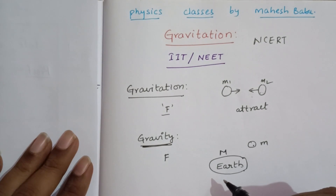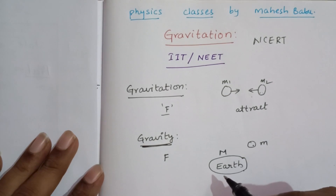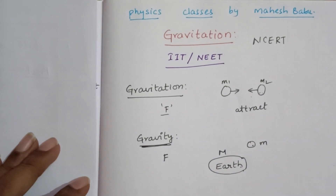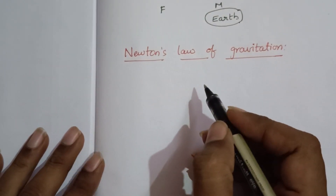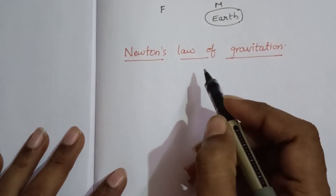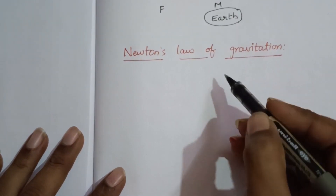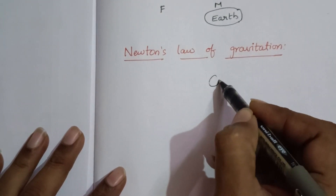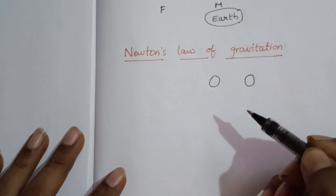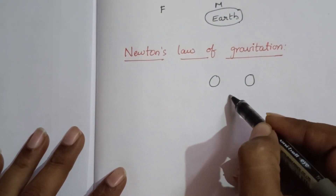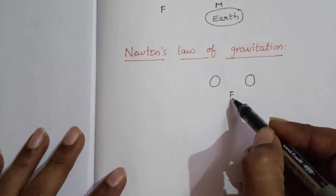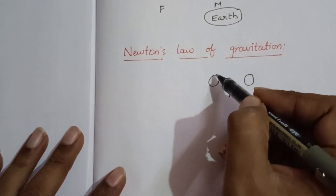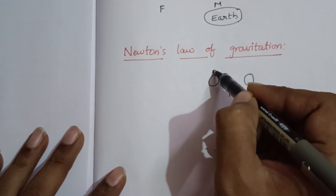Newton, the great scientist, gave a law related to gravitation known as Newton's Law of Gravitation. It states that in the universe, every object attracts every other object with a force, which is called gravitational force.